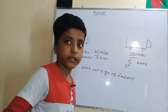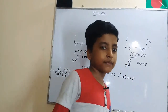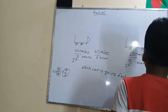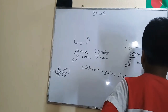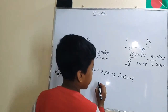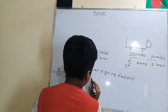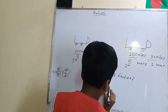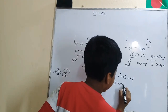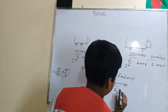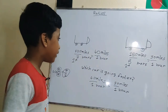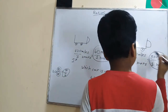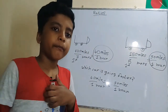The second truck's rate is 150 miles over 5 hours. 150 divided by 5 is 30, so 30 miles per hour. Now we can compare them: the first truck is going faster at 40 miles per hour versus 30 miles per hour. This is why unit rates are so helpful. Now you have a better idea about ratios!